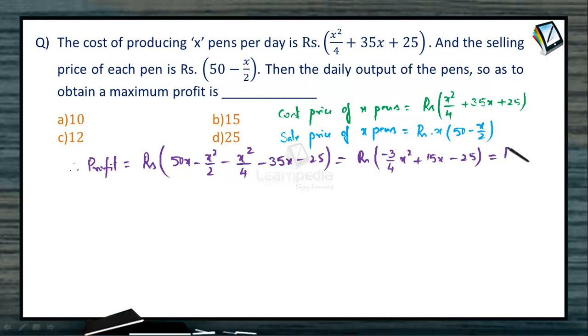Now what is our requirement? This profit, which we call it as P(x), should be maximum. So for P(x) to be maximum, what is the condition for a function to have maximum? Yes, P'(x) must be 0.